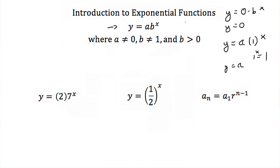We also say that b has to be greater than zero. If b were negative, then with an even exponent the b to the x term would be positive, but with an odd value of x it would be negative. The values would keep flip-flopping between positive and negative, which would make this not a function. So a cannot equal zero, b cannot equal one, and b must be greater than zero.